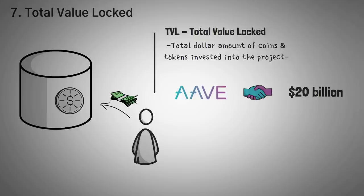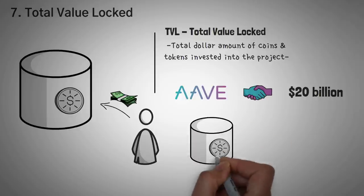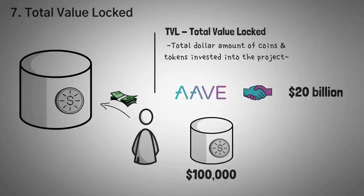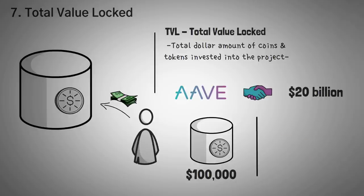Compare that to a degen yield farm I saw on a subreddit, CryptoMoonShots, that recently launched with around $100,000 total value locked. $100,000 is still a lot of money, but nothing in comparison to the $20 billion Aave has or the $10 billion that Curve Finance has.